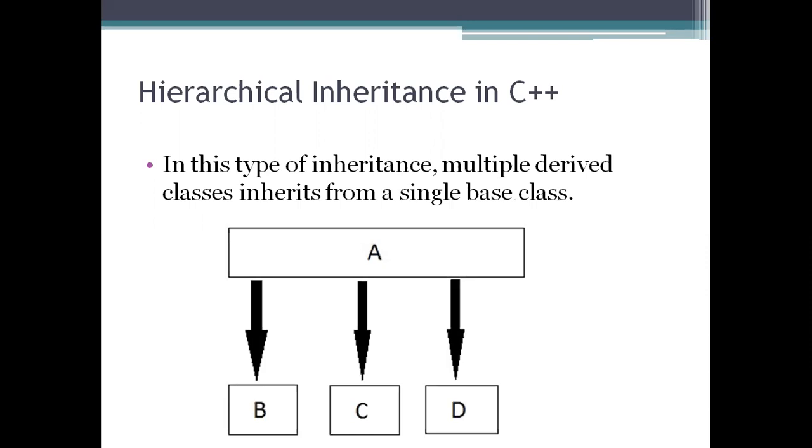Next, we have hierarchical. Hierarchical inheritance has only one level at the top, and multiple classes can be derived from it. This will further divide into other parts. So we call it hierarchical inheritance.